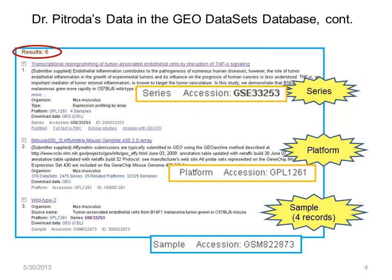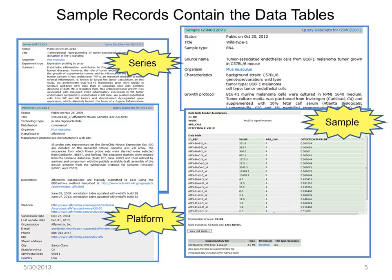Using the GSE accession retrieved six records. One is the series — the description of the study. One is the platform, in this case a commercial array from Affymetrix. And the other four are sample records, though only one is shown here. It is the sample records that contain the data tables.